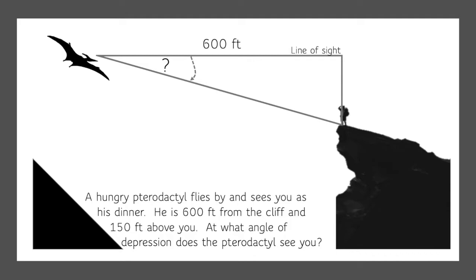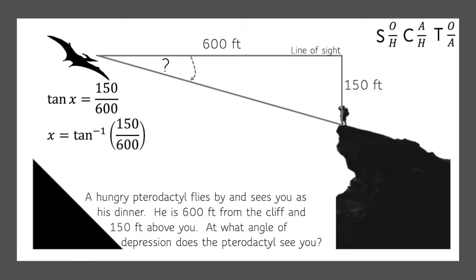We know that he's 600 feet from the cliff and 150 feet above you. So again, we're going to use tangent. Tangent of x equals 150 divided by 600, so x equals the tangent inverse of 150 divided by 600. Remember, the tangent inverse is the button above the tangent button on your calculator. So we know that x is 14.03 degrees. Here's another application.